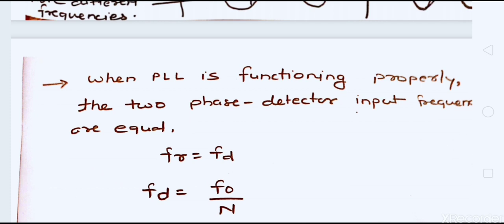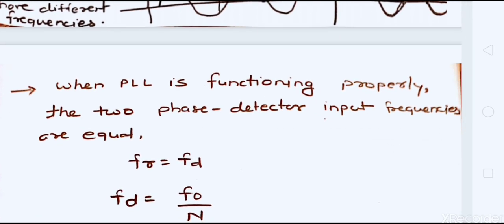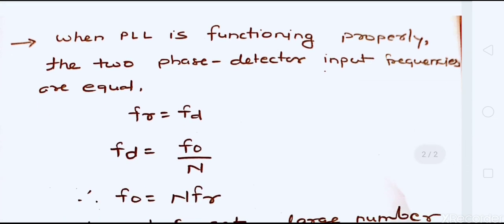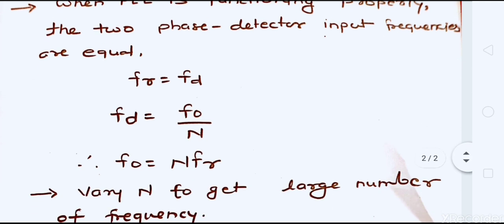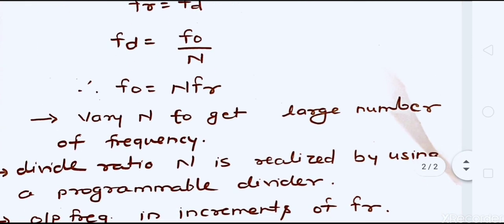When the PLL is functioning properly, the output of the error detector is zero, meaning FR equals FD. FR is the reference frequency and FD is the frequency from the feedback path. FD is obtained from FO — the output frequency of the VCO — as FD = FO / N. Setting FR equal to FD gives FO = N · FR. So you can synthesize different output frequencies using the fixed reference FR by changing N through a programmable divider.